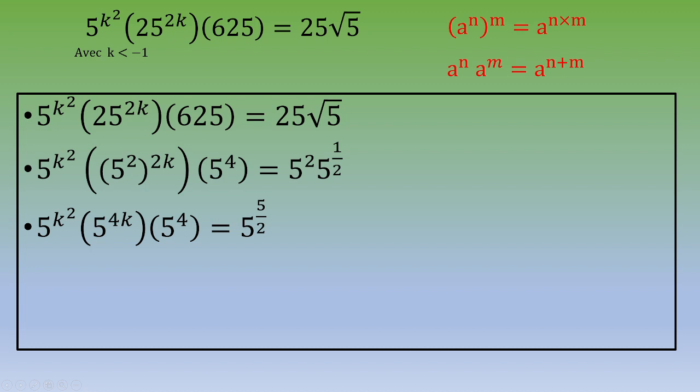So now you apply this formula. Because on the left side, you've got terms with the same base, which is 5. You end up with 5^(k²+4k+4). And on the right side, you've got 5^(5/2).